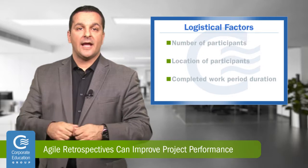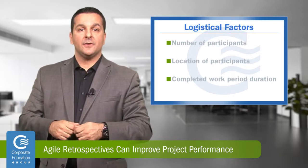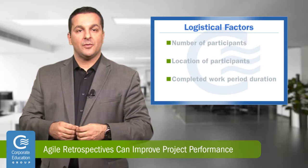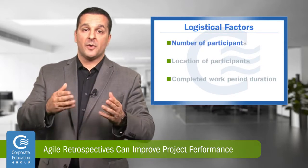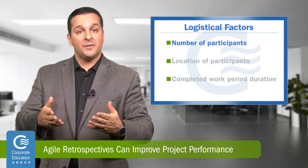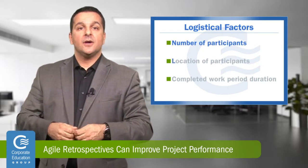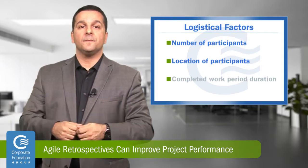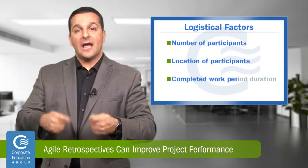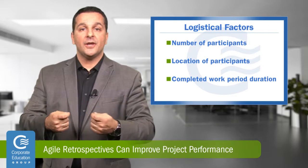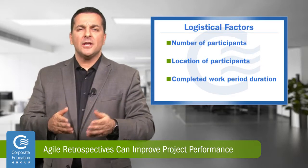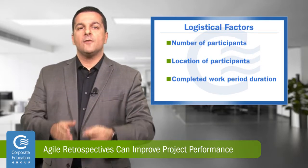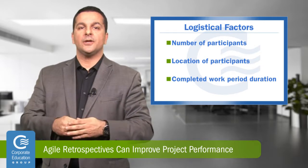Before conducting an agile retrospective there are a number of important logistical factors to consider, for example the number of participants to ensure adequate meeting space, the location of the participants if they're co-located and or virtual, and lastly the completed work period duration. Typically you'll need about 45 minutes of retrospective time for every one week of prior completed work.